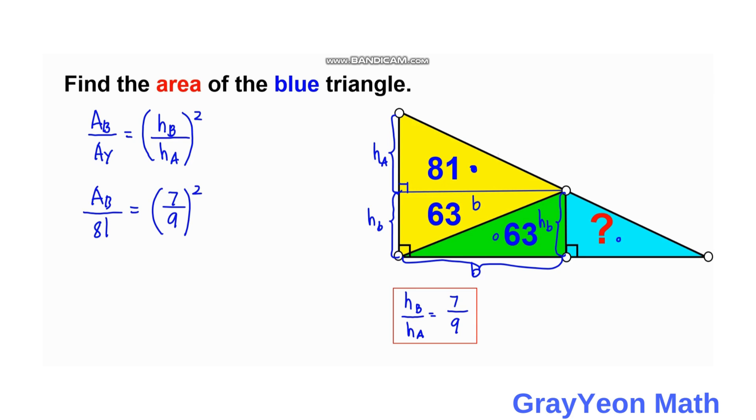Area of the blue is simply by cross multiplying, we have 81 times 7 squared over 9 squared. We can cancel this 81 and 9 squared, so we have area of the blue to be 7 squared or 49 square units. And that is our answer.